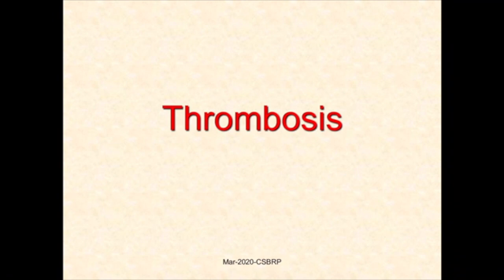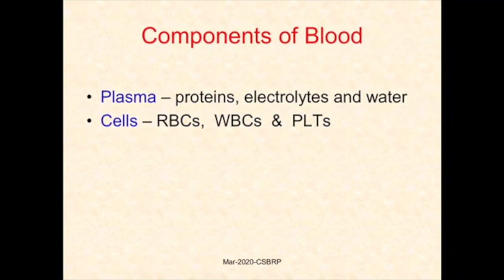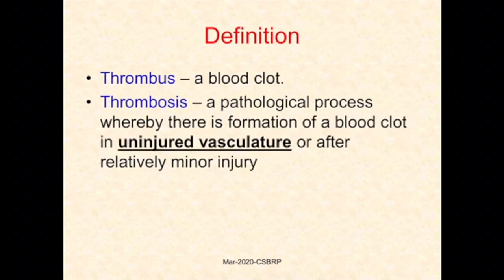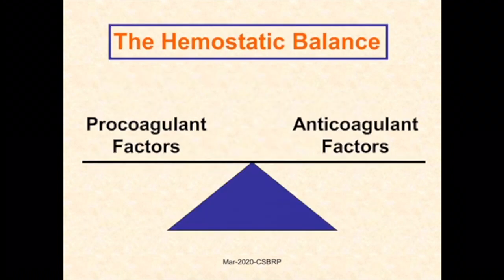Coming to thrombosis proper: blood contains plasma and cells; cellular components include WBCs, RBCs, and platelets; plasma components include proteins, electrolytes, and water, with coagulation factors included among proteins. By definition, a thrombus is a blood clot, and thrombosis is the pathological process whereby there is formation of a blood clot within the vascular compartment. It may or may not be associated with endothelial injury. Hemostatic balance between pro-coagulant and anti-coagulant factors tips toward pro-coagulant factors in thrombosis.